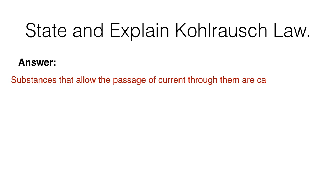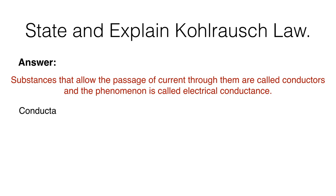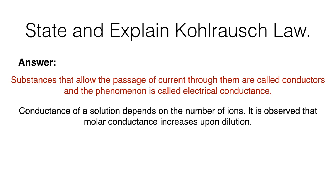State and explain Kohlrausch's law. Substances that allow the passage of current through them are called conductors and the phenomenon is called electrical conductance. Conductance of a solution depends on the number of ions.